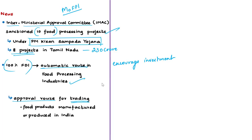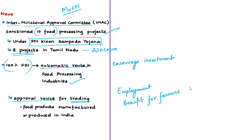The sanctioned projects are likely to generate employment for 10,000 people, creating direct and indirect employment and opportunities in rural areas, benefiting nearly 40,000 farmers overall. In Tamil Nadu itself, these projects are likely to generate around 8,000 jobs and benefit 32,000 farmers.